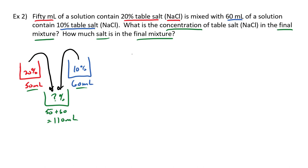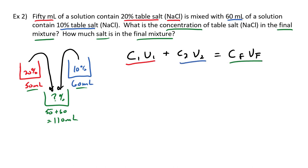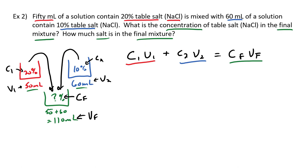Because we're mixing solutions together, we use C1V1 + C2V2 = CfVf. Let's color-code: first mixture, second mixture, final mixture. V1 is the volume of the first solution; C1, C2, V2, and the final volume are all defined. We have six variables total and I've defined five of them — all I need to do is substitute in the knowns and solve for the one unknown I don't have.